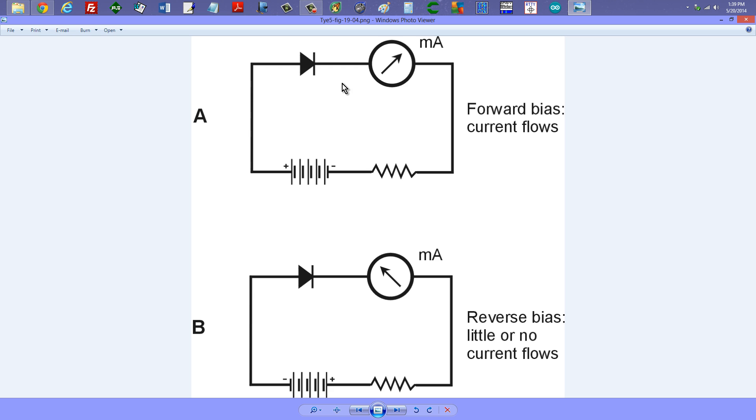Here's a diagram of two test circuits that we can actually use to test a diode. These resistors here are there to prevent excessive current from flowing through the diode and burning it out. Notice the negative terminal of the battery is on the right. The positive terminal of the battery is on the left here in drawing A, whereas in drawing B, it's exactly reversed.